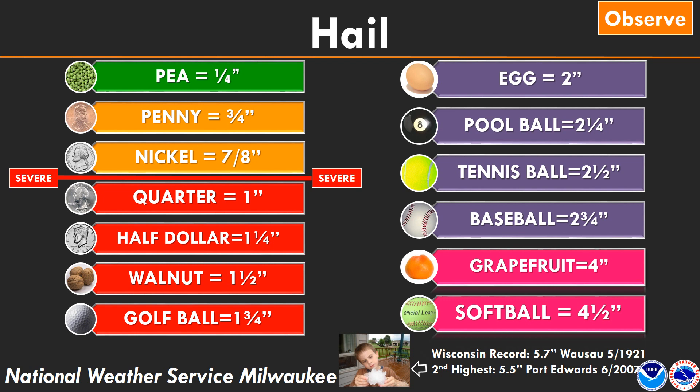If you don't have a ruler, there's a general chart for estimating hailstone size. For example, if a hailstone is comparable to a golf ball, you have roughly a two-inch diameter hailstone. Various common objects can be used to describe what you have. One important distinction: be aware of the difference between quarter-sized hail and a quarter-inch hailstone. Most people see the pea-sized quarter-inch hailstone, but our severe threshold is quarter-sized — the size of the coin itself.